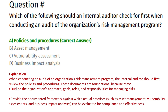The correct answer for this question is Option A, Policies and Procedures. When conducting an audit of an organization's risk management program, the internal auditor should first review the policies and procedures. These documents are foundational because they outline the organization's approach, goals, roles and responsibilities for managing risk, and provide a documented framework against which actual practices such as asset management, vulnerability assessment, and business impact analysis can be evaluated for compliance and effectiveness.